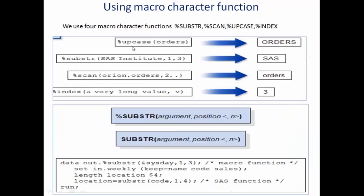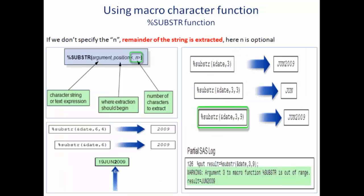Now here, the same upcase, substring, scan, and index is given. For substring, we need to know the argument position, that is from where we want to start and the length of the string. This is how we used to do in base SAS, without percent sign. Otherwise, all the arguments which we supply are the same. Here, some more examples of substring are given.